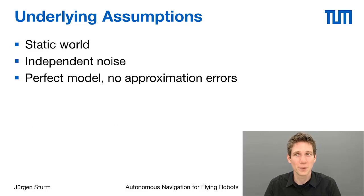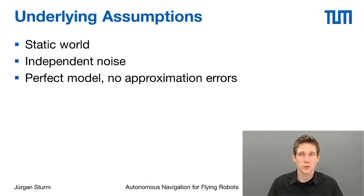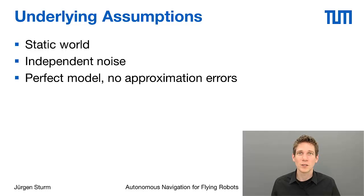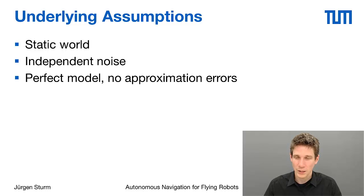The underlying assumptions of the Markov filter are that we are living in a static world — if things are not influenced by an action modeled in vector u, we assume everything else stays the same. Furthermore, we assume that the noise on our sensors is completely independent. If this noise were dependent on each other, we would need additional arrows between the noise variables. We also assume that our model is perfect and that we don't have any approximation errors that might violate this independence assumption.